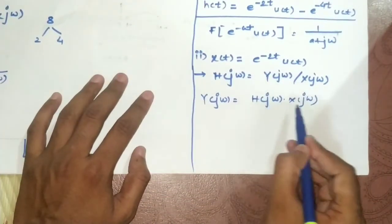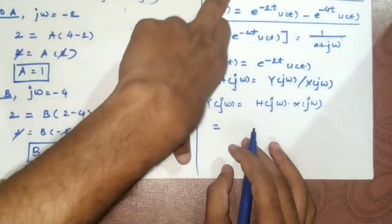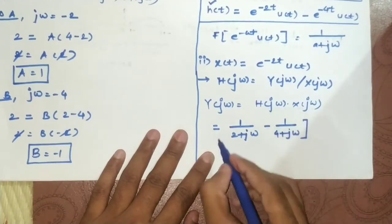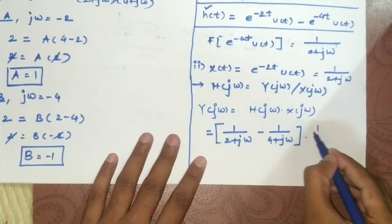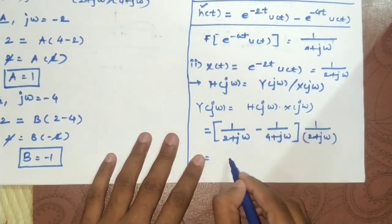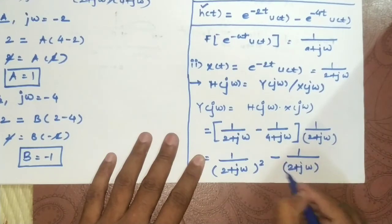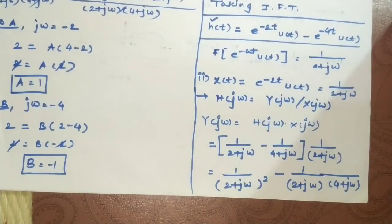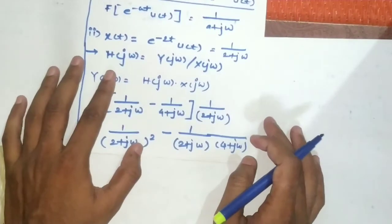Substituting, Y(jω) = [1/(2 + jω) − 1/(4 + jω)] × 1/(2 + jω) = 1/(2 + jω)² − 1/[(2 + jω)(4 + jω)]. We need to simplify this further. Applying partial fraction expansion to 1/[(2 + jω)(4 + jω)] gives A/(2 + jω) + B/(4 + jω). After cancelling the denominator, we get 1 = A(4 + jω) + B(2 + jω).